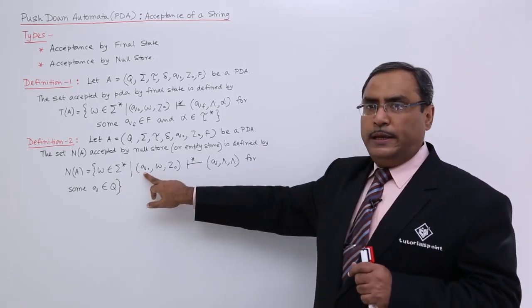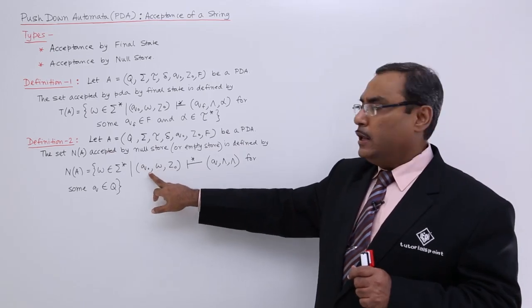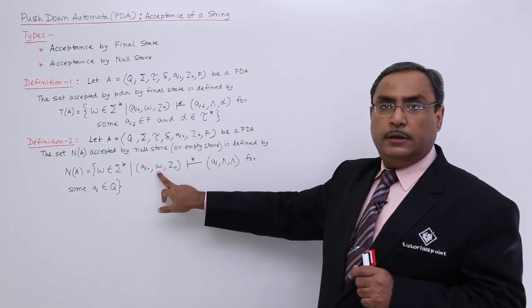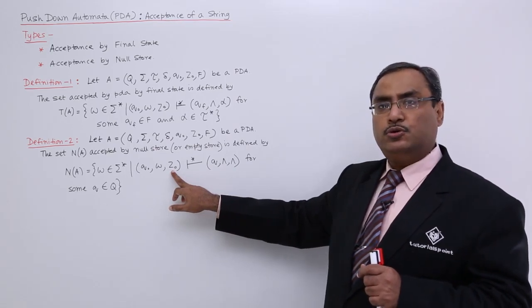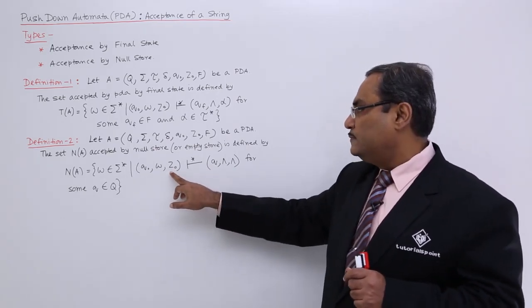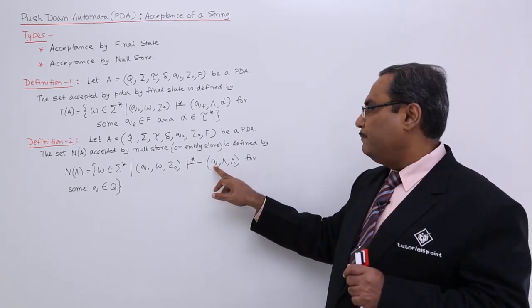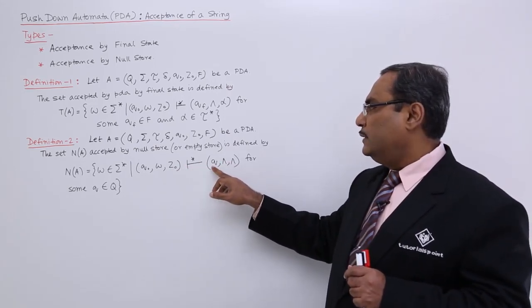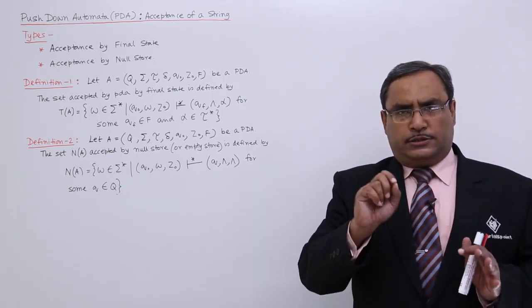Initial ID will be (Q₀, W, Z₀). Q₀ is the initial state, W is the input string, Z₀ is the initial pushdown store top symbol. After multiple transitions, we have (Q, κ, κ). That means any state - it is not mandatory that it will be a state from the final states.